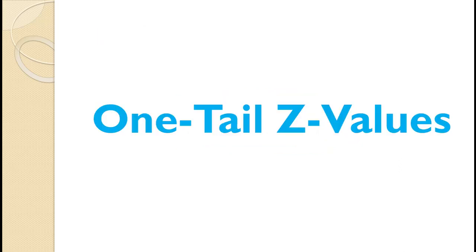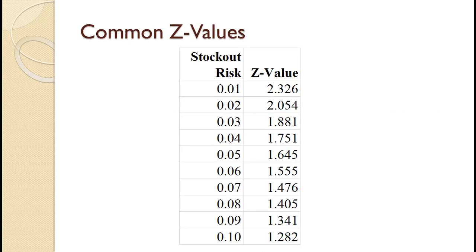When dealing with variable demand, we use a Z value from the standard normal distribution. Since we can only have a stock out when demand is higher than average, we are always using a one-tailed Z value — specifically, always the positive one-tailed Z value. The table on the slide shows common stock out probabilities and their associated Z values.